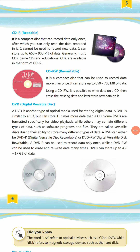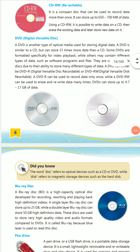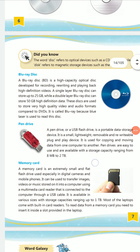A DVD (Digital Versatile Disc) is another media storage format that can store more data — up to 4.7 GB per disc, which is about 15 times more than a CD. DVDs also come as DVD-R (write once, read only) and DVD-RW (rewritable, where data can be written again and again as per the user's choice).